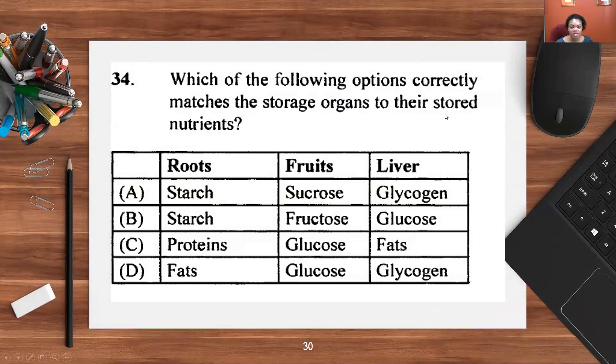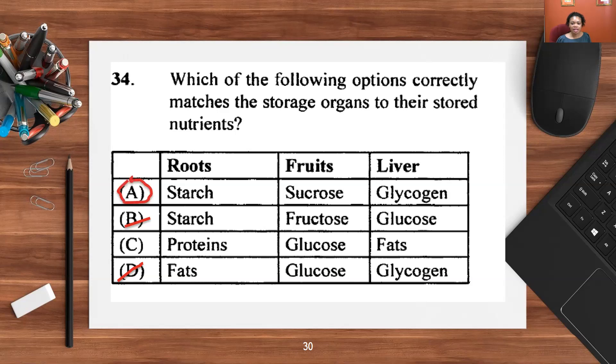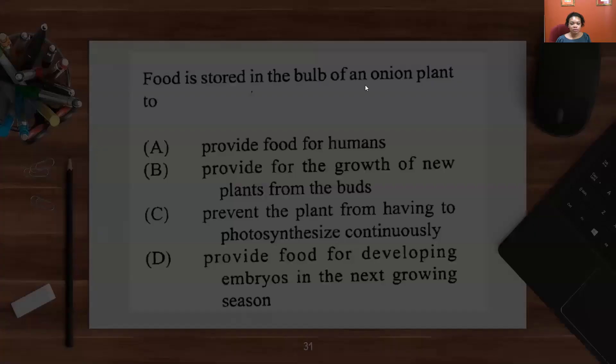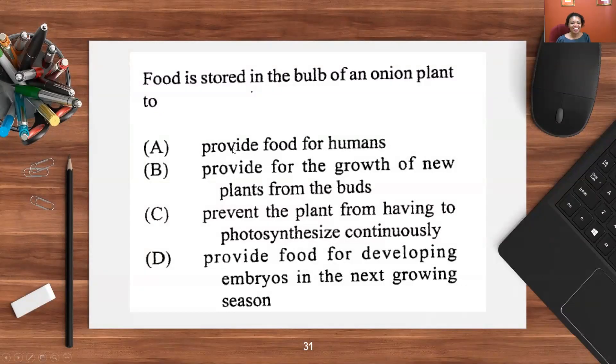Which of the following options correctly matches the storage organs with their stored nutrients? We're looking at roots, fruits, and the liver. We know that the liver stores glycogen. It can also store small amounts of fat. Too much and you get fatty liver, cirrhosis of the liver also if you drink alcohol. We can eliminate B and D. Roots tend to store starch. Fats and oils are usually stored in the nuts or seeds. The best response here is A. Remember that fruits can either store sucrose, glucose, or fructose in combination. Food is stored in the bulb of an onion plant to provide for the growth of new plants from the buds.